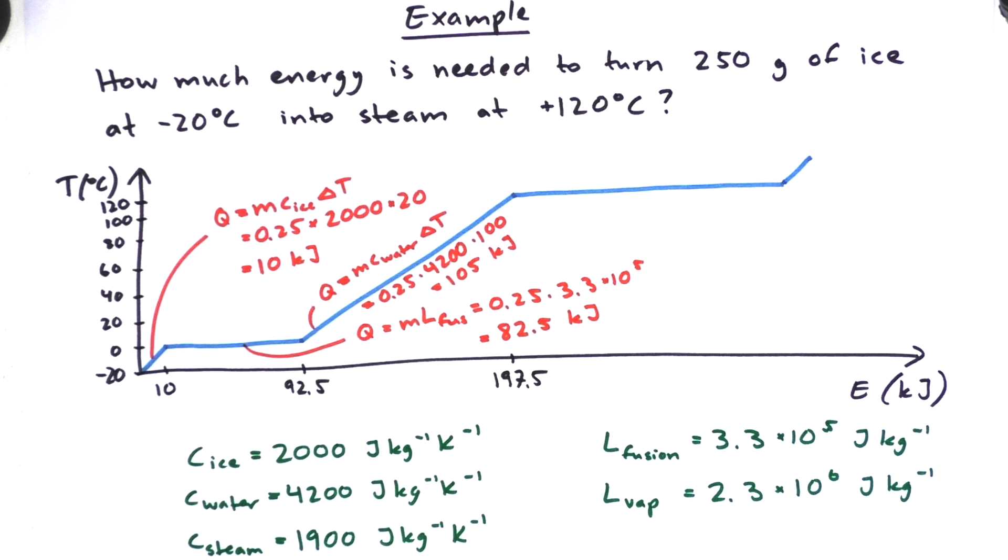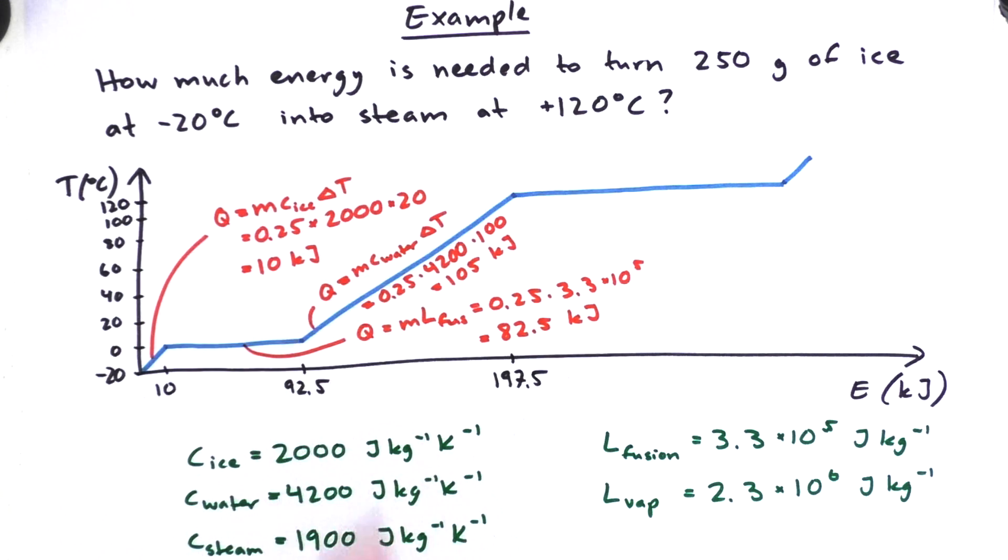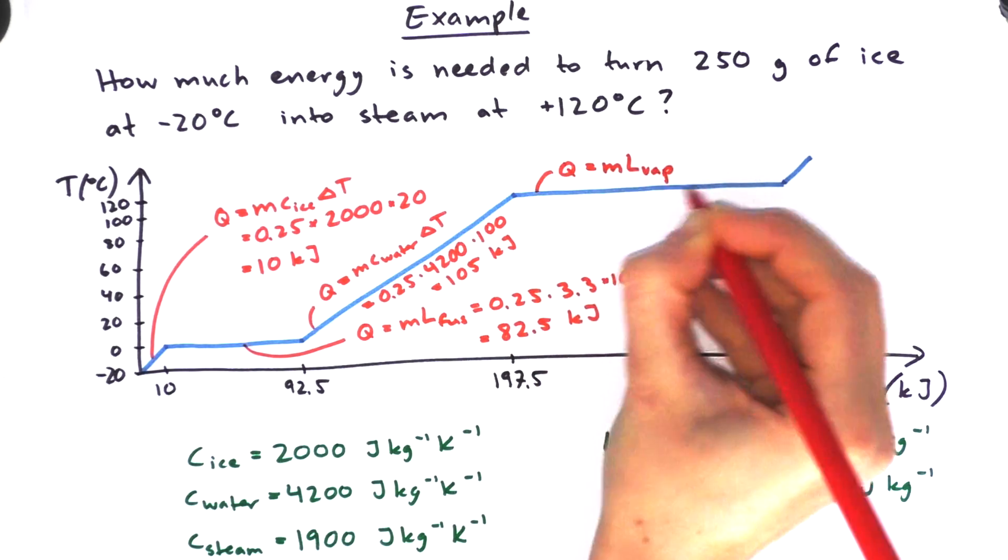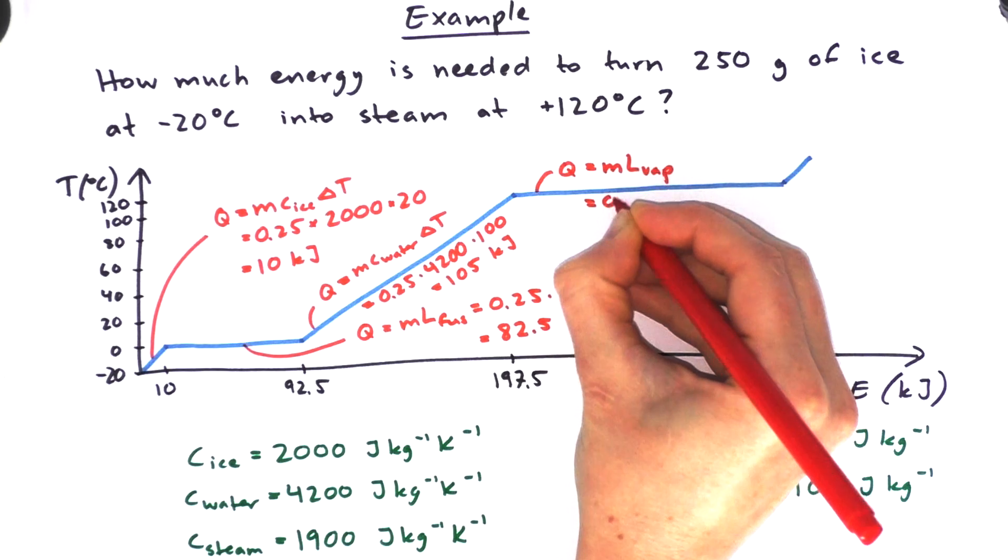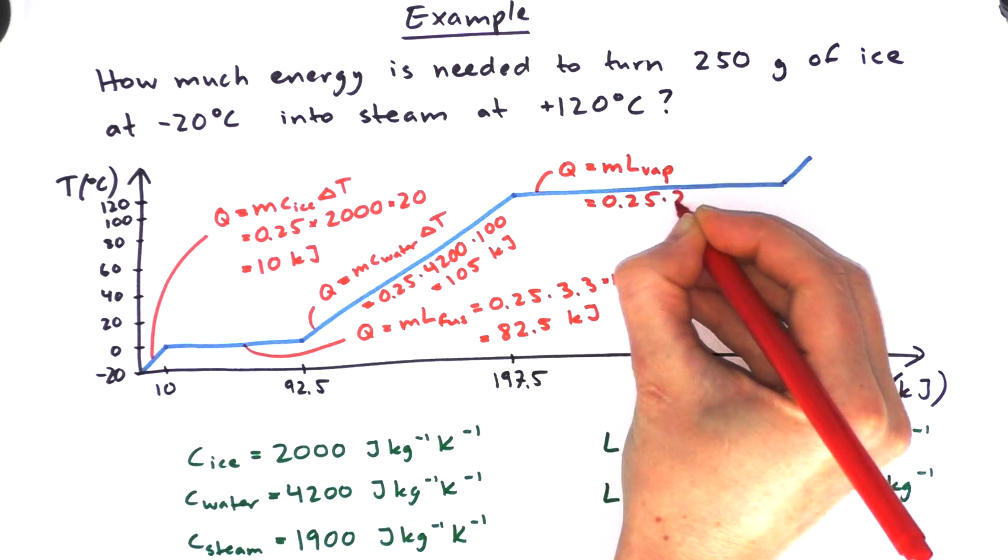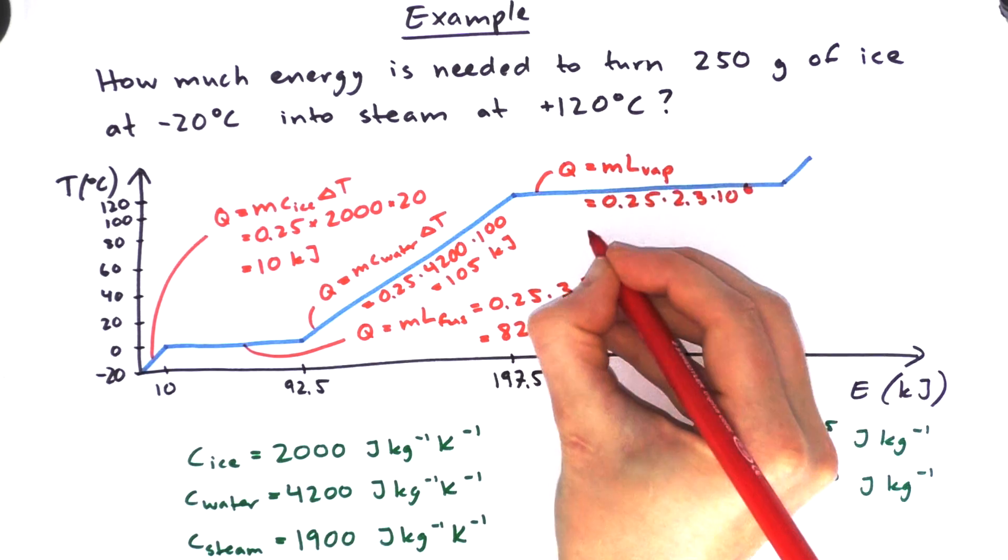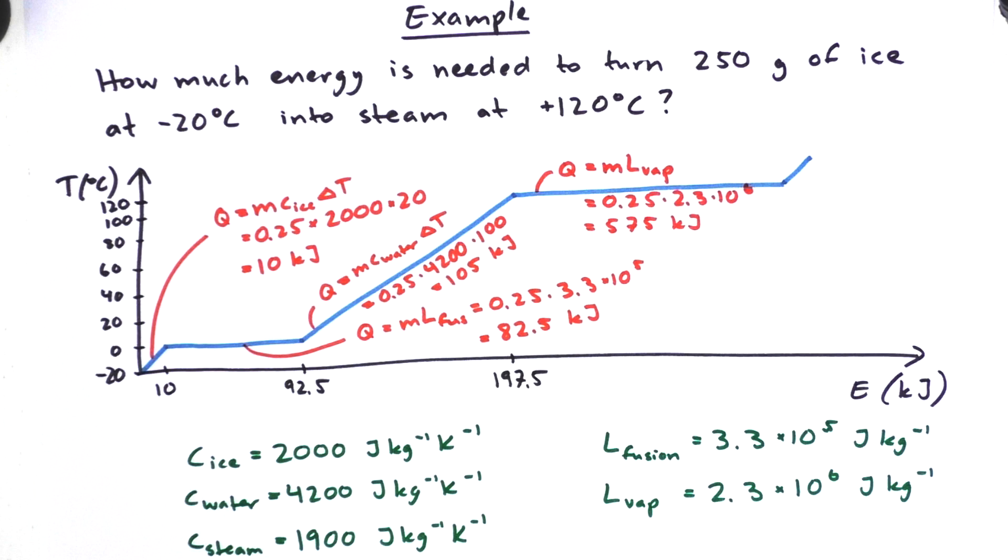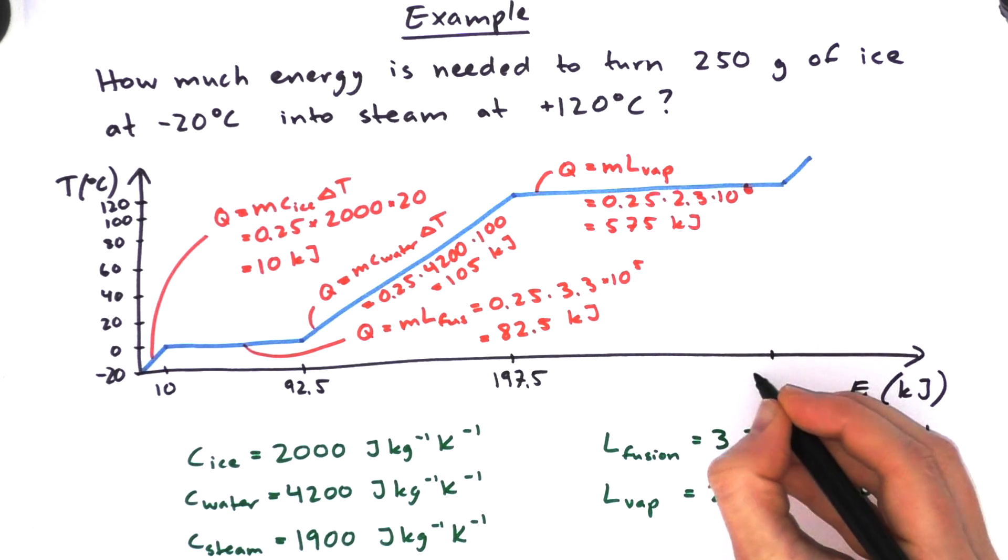All right, so now we have water at 100 degrees Celsius and we're going to need to boil it all off to become steam. And again we're going to use the latent heat equation. So we plug it into Q equals ML and we get a whopping 575 kilojoules. That's much more than we had so far. And we're going to have to add that to our 197.5. When we add them together we get 772.5.